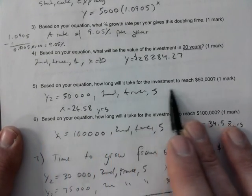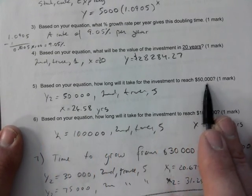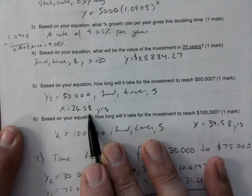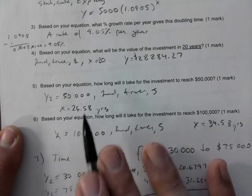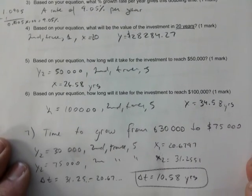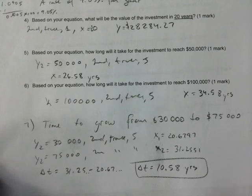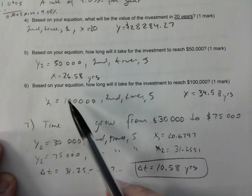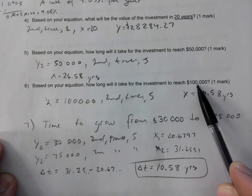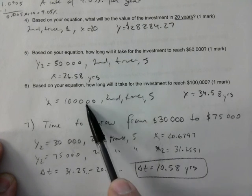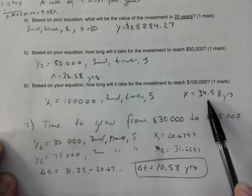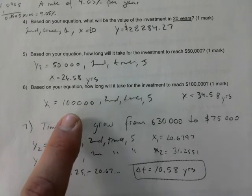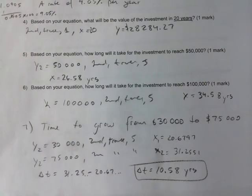Based on your equation, how long would it take for investment to reach 50,000? Y2 is equal to 50,000. Second trace five, some window adjusting needed. 26.58 years for that. That's one mark. And then the one I added. Oh, no, wait, there's one more. For how long to take 100,000, for it to grow to 100,000? Same steps, 34.58 years. So just watch out what's being asked and what needs to be done.